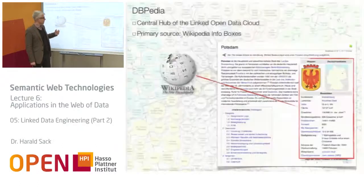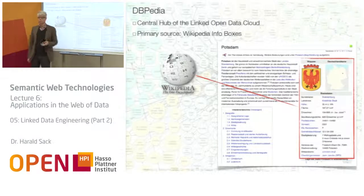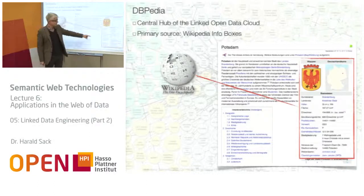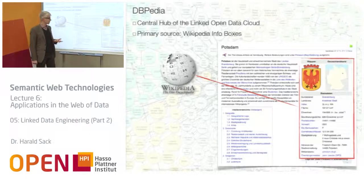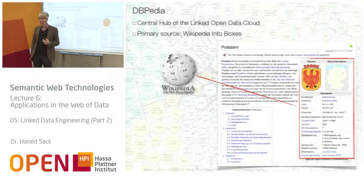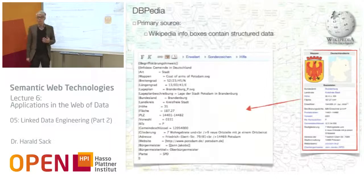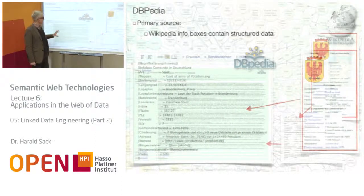Let's take a look at DBpedia. DBpedia is the central hub of the Linked Open Data Cloud, and it comes from Wikipedia. In Wikipedia, for lots of articles on the right side, there is a so-called info box. This info box is nothing else but a structured table containing structured data. This structured data can be read and translated in an automated way into RDF. In the wiki syntax language of Wikipedia, that is the content of the info box — always name-value pairs — which can simply be translated into RDF. And what comes out of this is DBpedia.